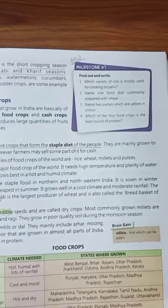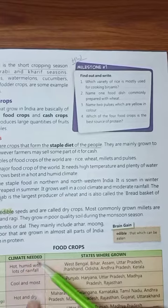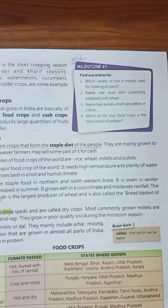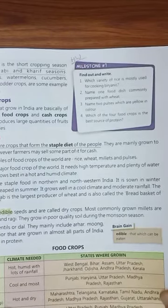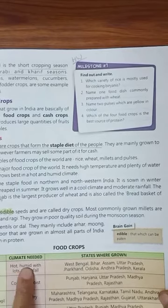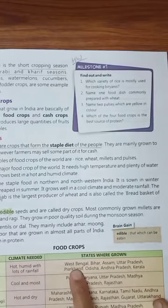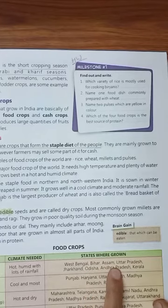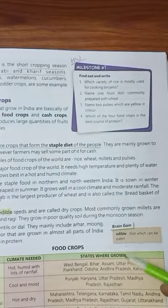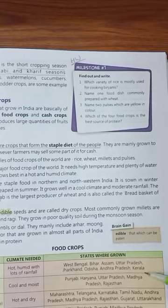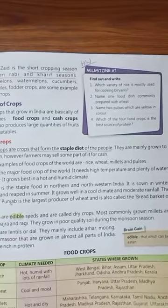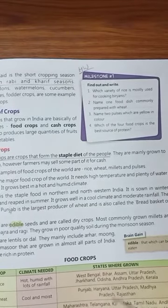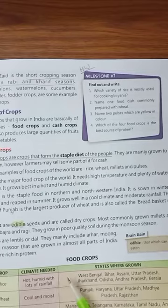These are the food crops with the climate needed and the states where each crop is grown. For rice — hot and humid with lots of rainfall — it is grown in West Bengal, Bihar, Assam, Uttar Pradesh, Uttarakhand, Odisha, Andhra Pradesh and Kerala. Similarly, other crops are mentioned in the table.